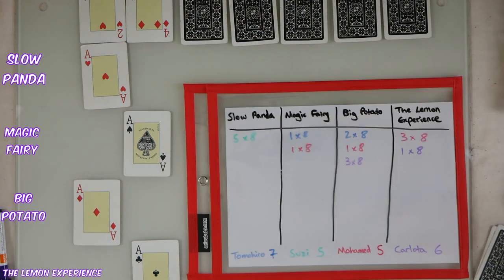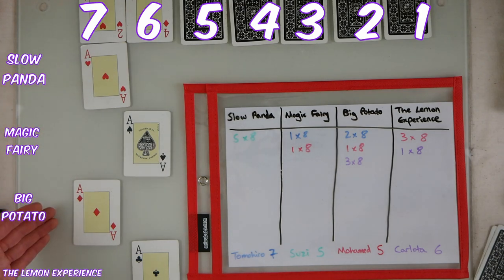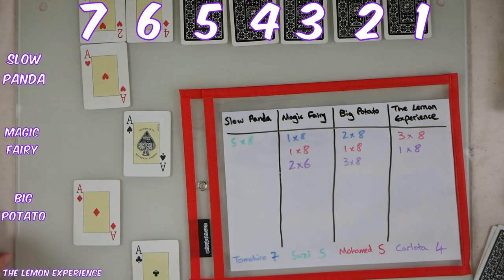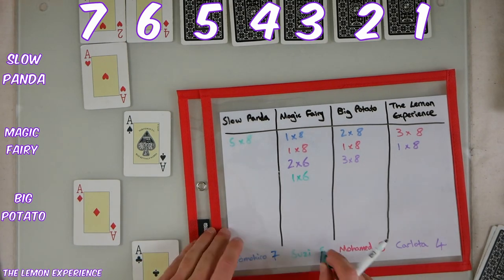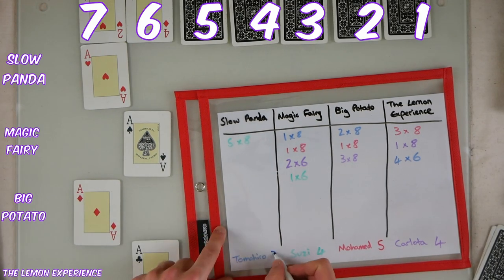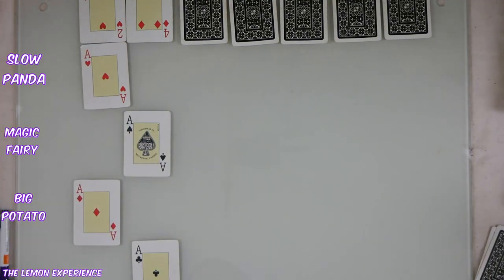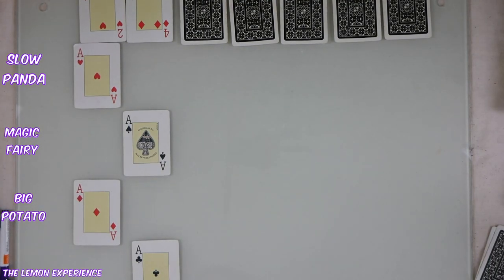At this point, players can make bets again, but this time the odds are different. For each space the horses have moved forward, the odds decrease by one. So Slow Panda and Big Potato now have odds of seven, and Magic Fairy and the Lemon Experience have odds of six. Carlotta feels confident about Magic Fairy, so she'll bet two of her points on that with odds of six. Meanwhile everybody else can make lots of bets too. Now we do another round of four cards turned over and commentate on the action, with Carlotta now the commentator.